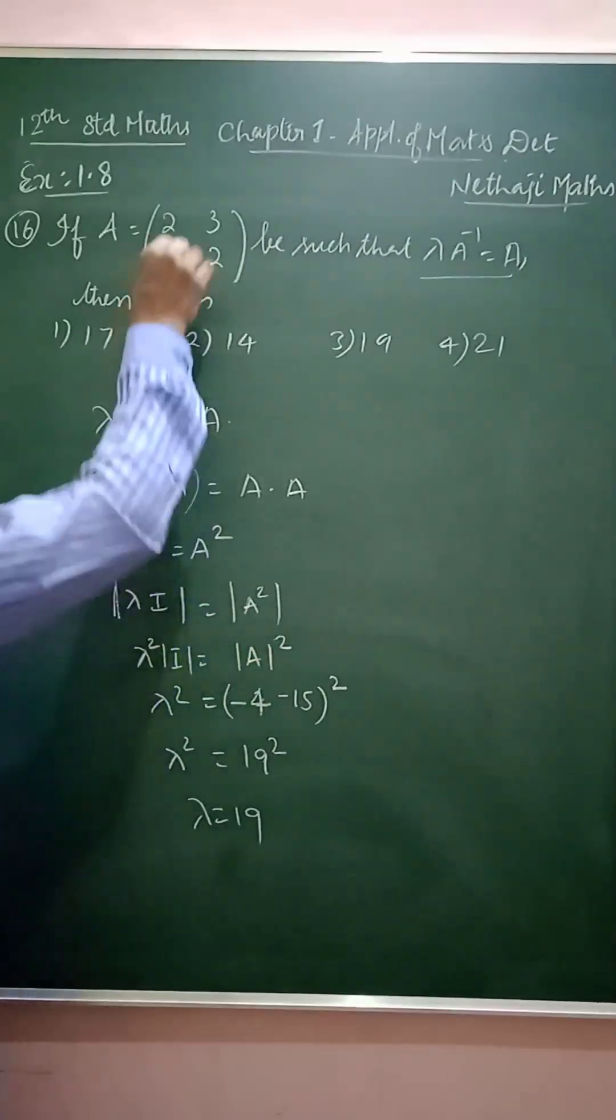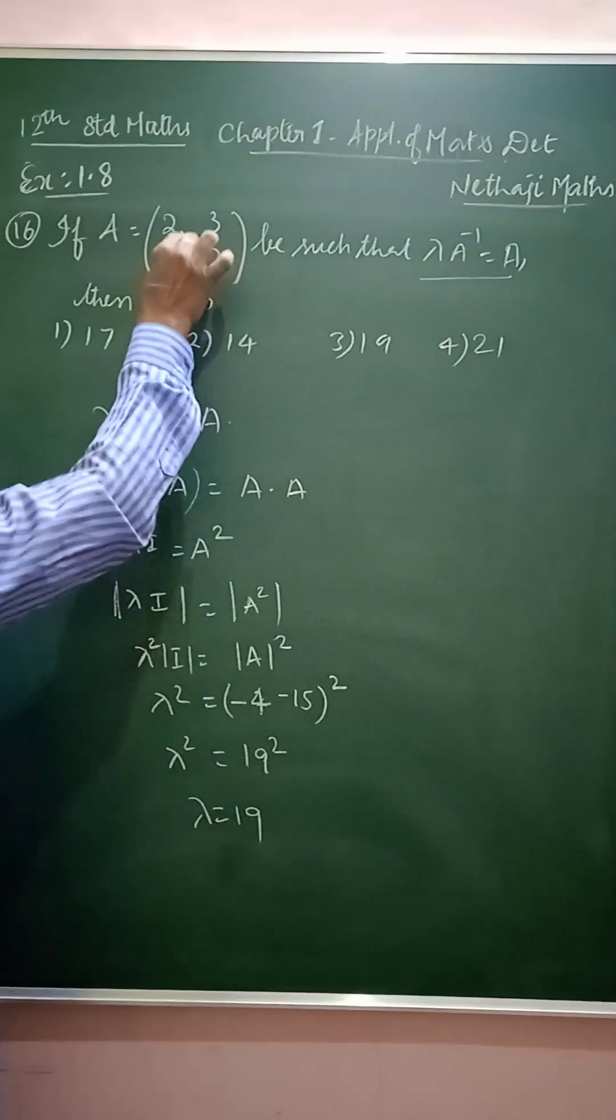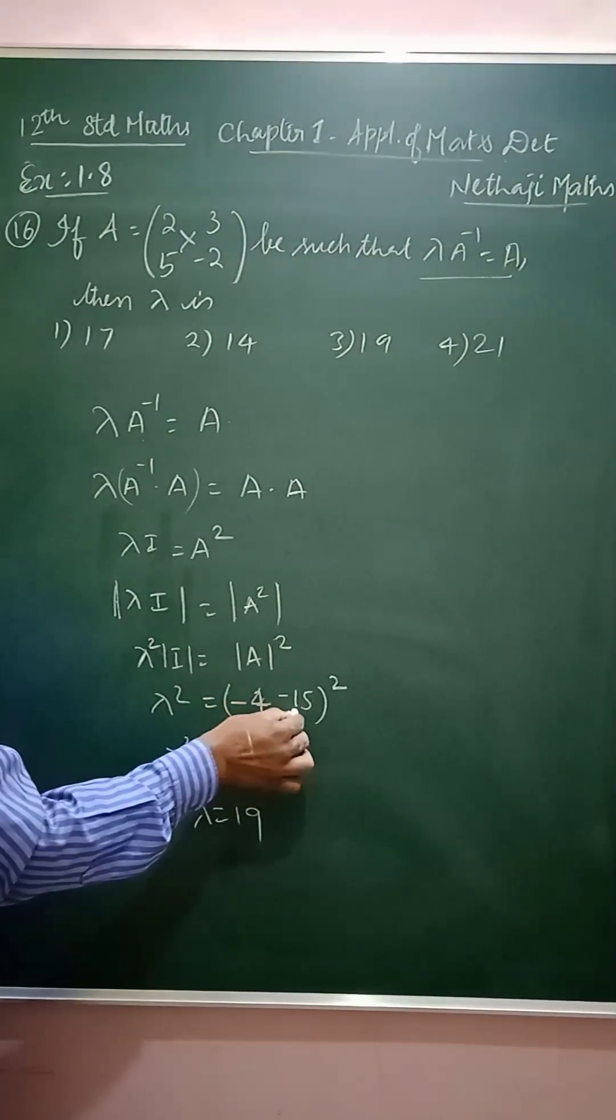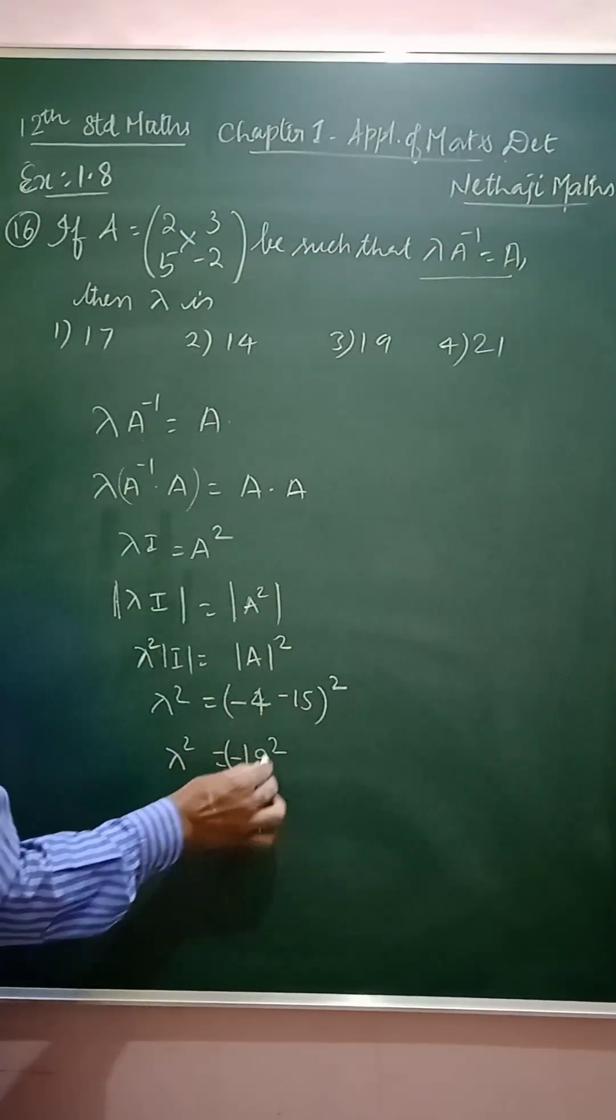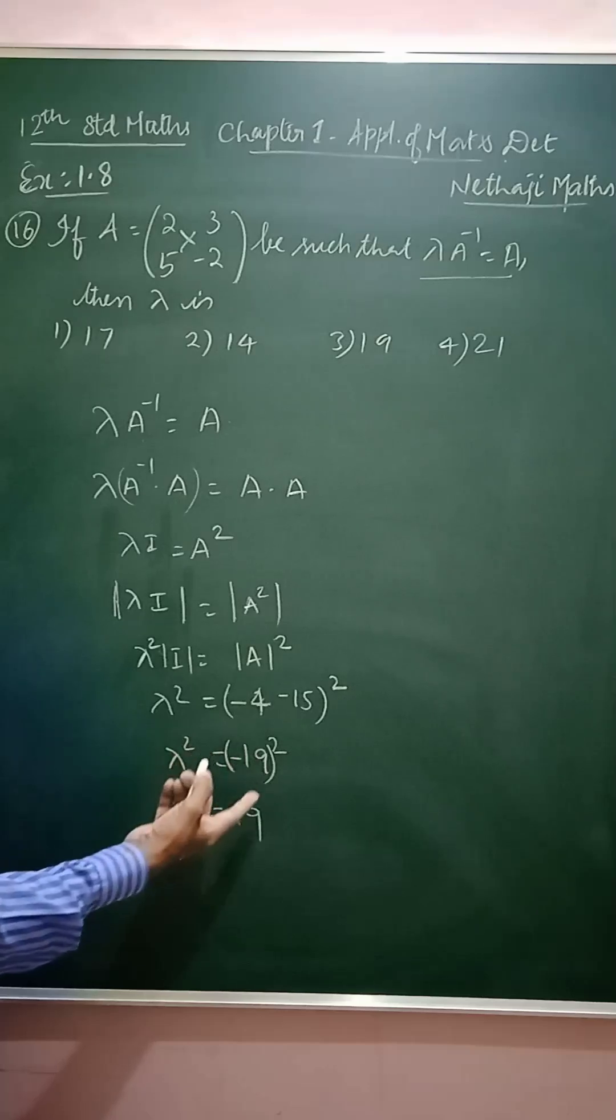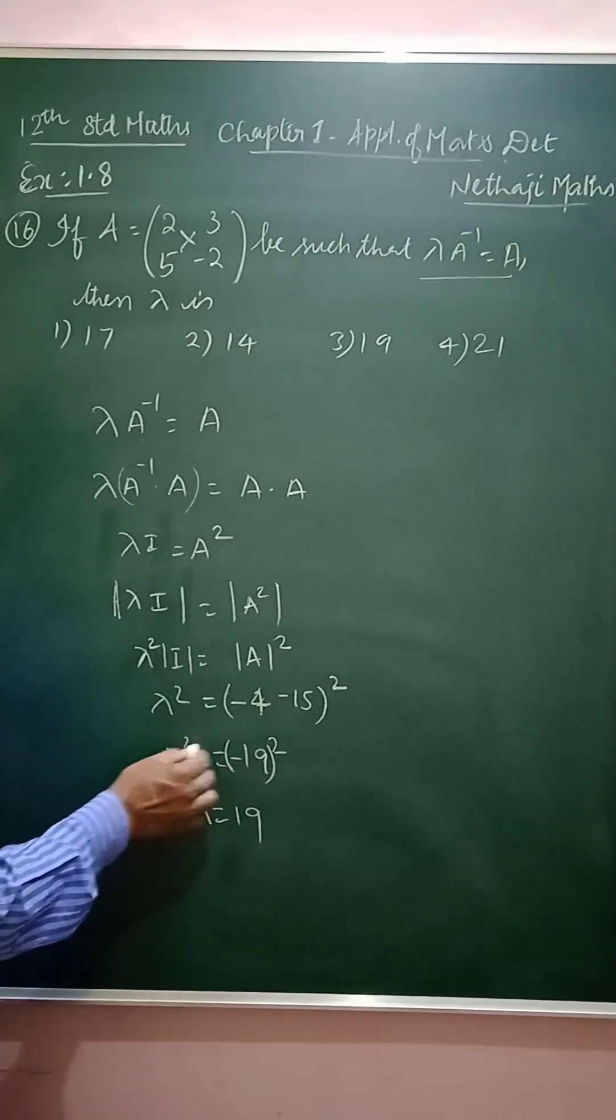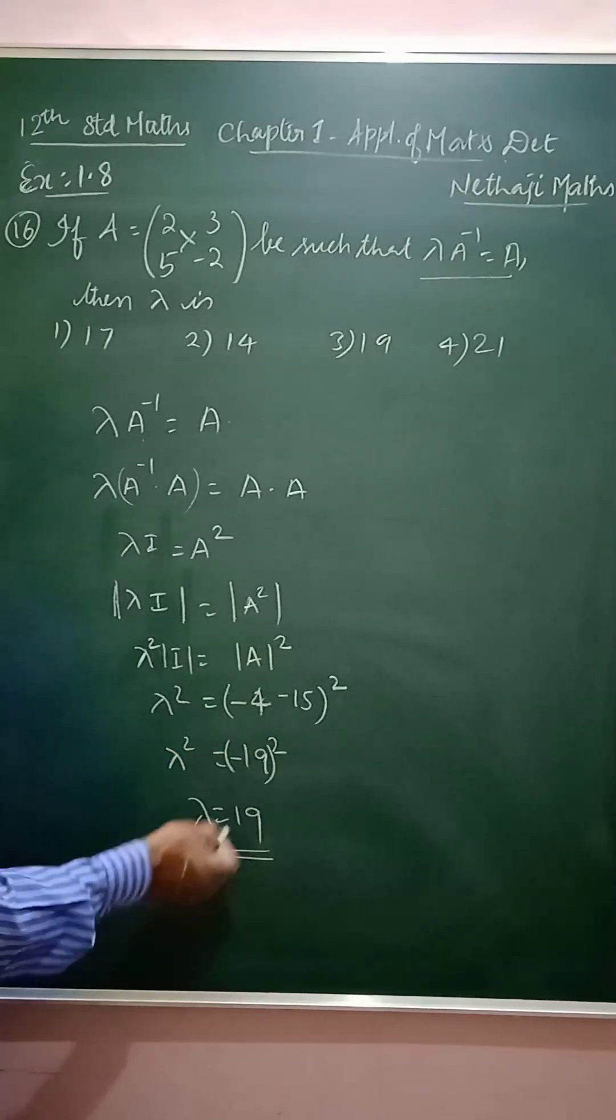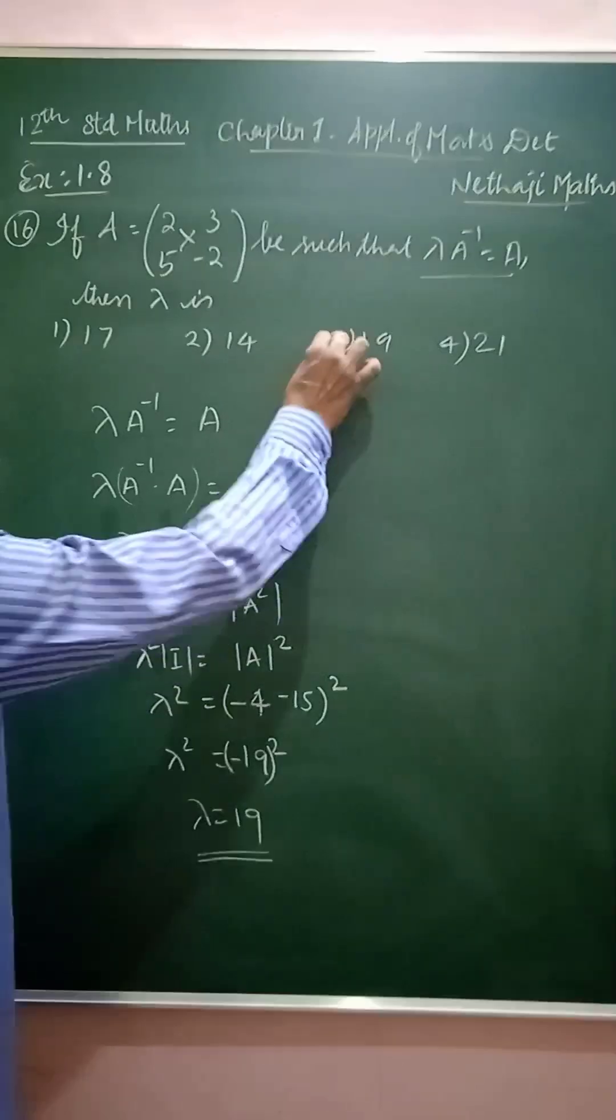So, determinant of A is minus 4. This is minus 4 minus 15. That is minus 19 square. So, minus square is equal to 19. So, lambda is equal to 19. Option is 3.